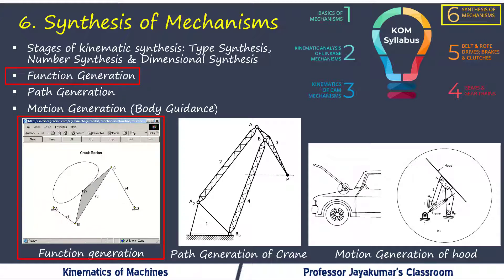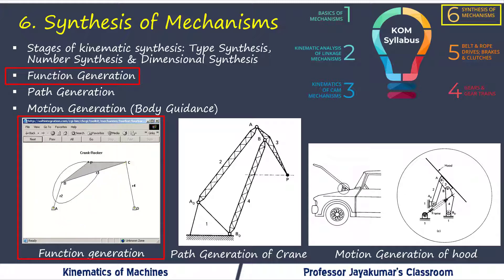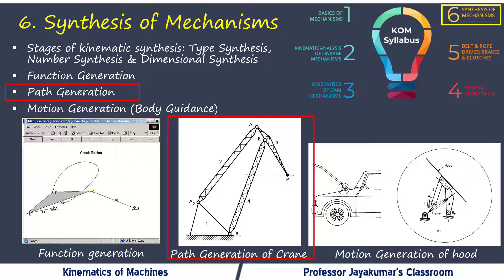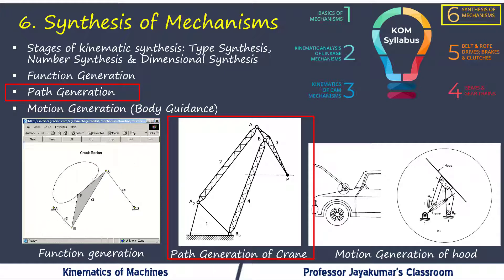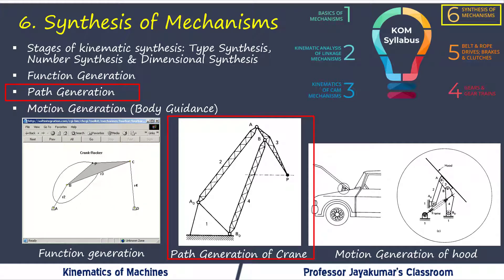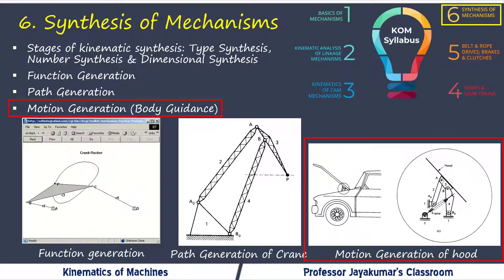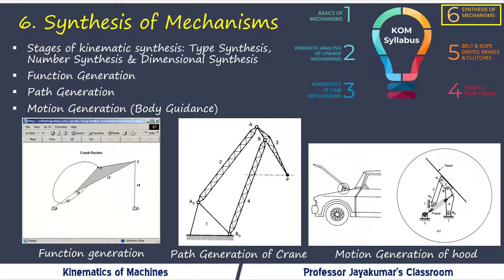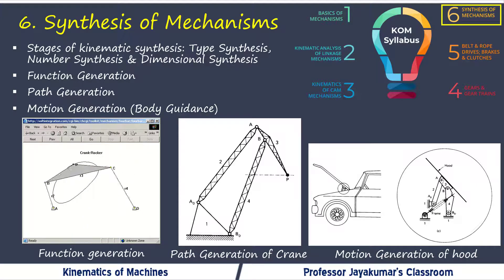Synthesis problems can be broadly of three types: function generation, path generation, and motion generation. In function generation, the motion of the input link is correlated to the motion of the output link. In path generation, a point on the coupler link is constrained to describe a path with reference to the fixed frame. In motion generation, a mechanism is designed to guide a rigid body along a prescribed path. These are the various domains we are going to cover in this course — Kinematics of Machines.